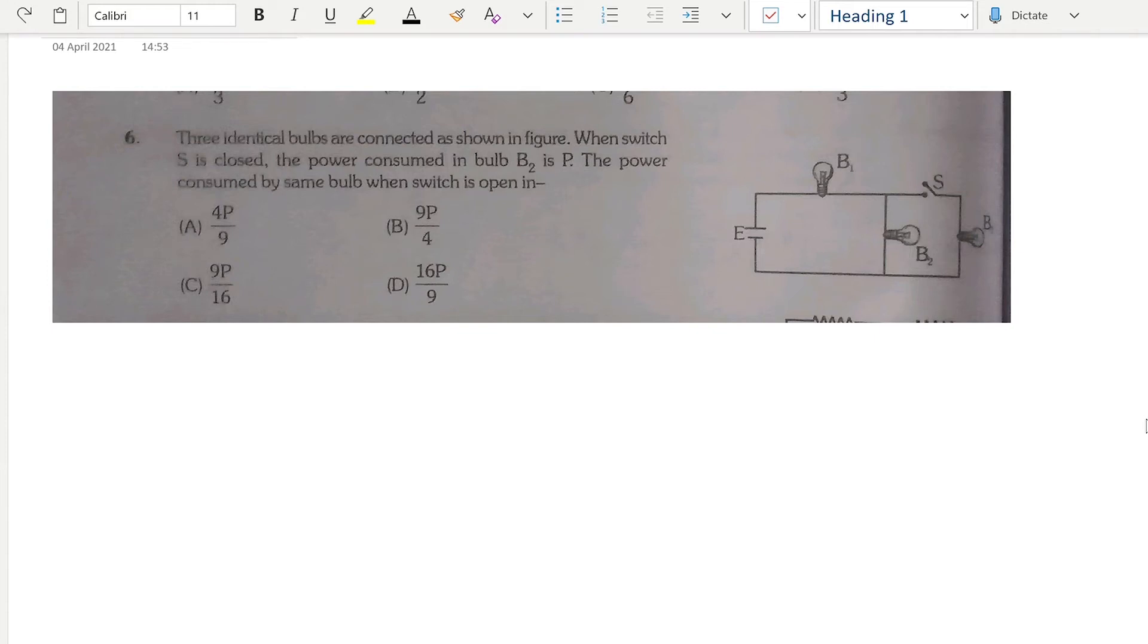This is a video request by someone who commented on my video, so I'm going to quickly go over how you solve this question. It says we have three identical bulbs which are connected. When switch S is closed, the power consumed in bulb 2 is P, and the power consumed by the same bulb when the switch is open is what we're trying to find.